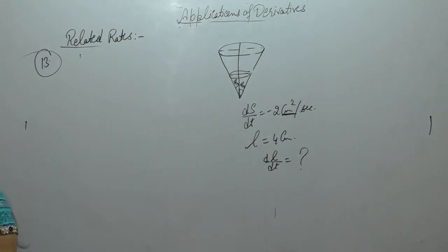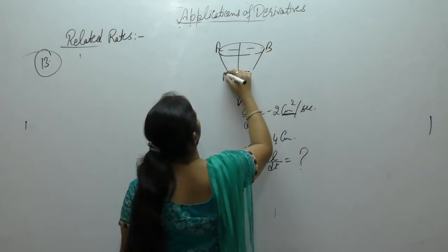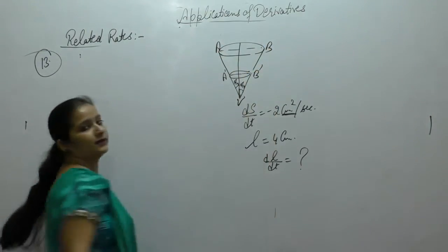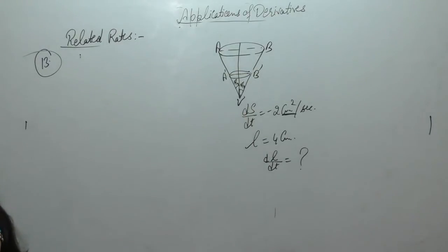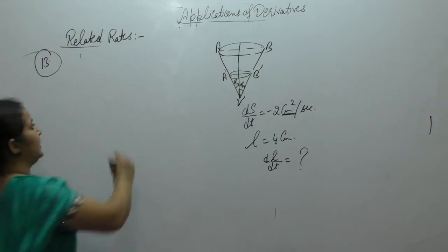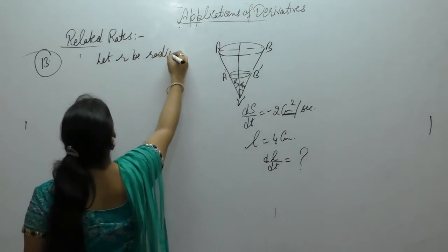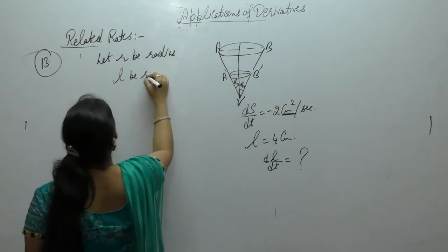Let VA be the conical funnel of semi-vertical angle π/4 at any time t. The water in the cone also forms a cone. Let r be the radius and l be the slant height of the cone.